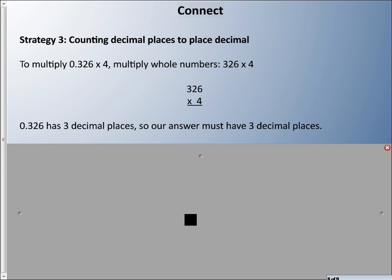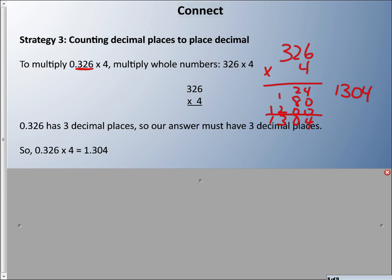And then again, counting decimal places to place the decimal. So, if I wanted to do 326 thousandths times 4, I'd multiply as a whole number, and I'm keeping track that I have three decimal places there. 326 times 4, well, that's 24, 20 times 4 is 80, and 300 times 4 is 1,200. So, it's around 1,304, right? Well, remember I had three decimal places. So, I have to place my decimal with three decimal places. So, the answer is 1.304 or 1 and 304 thousandths.